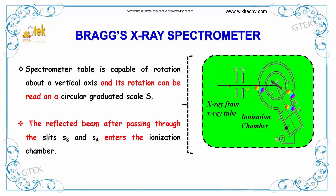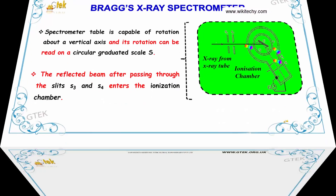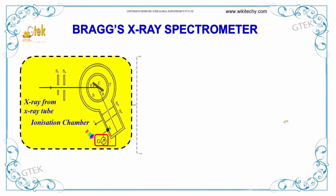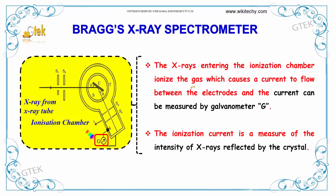The reflected beam, after passing through the slits S3 and S4, enters the ionization chamber. The X-rays entering the ionization chamber ionize the gas, which causes a current to flow between the electrodes. This current is measured by a galvanometer G, and the ionization current serves as a measure of the intensity of X-rays reflected by the crystal.